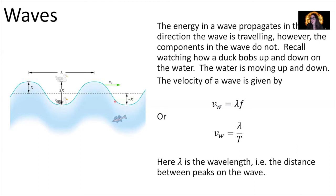We can use similar quantities to describe waves. The wavelength is the distance between consecutive maximum amplitudes of the wave — the distance between the peak of one wave and the next peak, or similarly measured from the troughs. The wavelength is a unit of distance and is represented by the Greek letter lambda (λ).